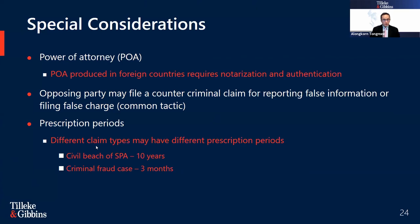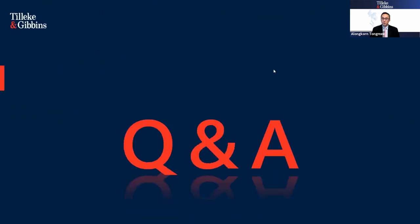The last tip is prescription period — or statute of limitations under Thai law. The prescription period varies depending on case type. A civil case for breach of an SPA has a 10-year prescription period from the date of breach. A civil wrongful act claim has a one-year prescription period. For compoundable criminal offenses such as fraud, the injured person must file a criminal complaint within three months from the date he becomes aware of the offense and the offender. For non-compoundable public offenses such as murder, the prescription period is 20 years. We have come to the end and hope our presentation has been helpful. Now it's time for Q&A.